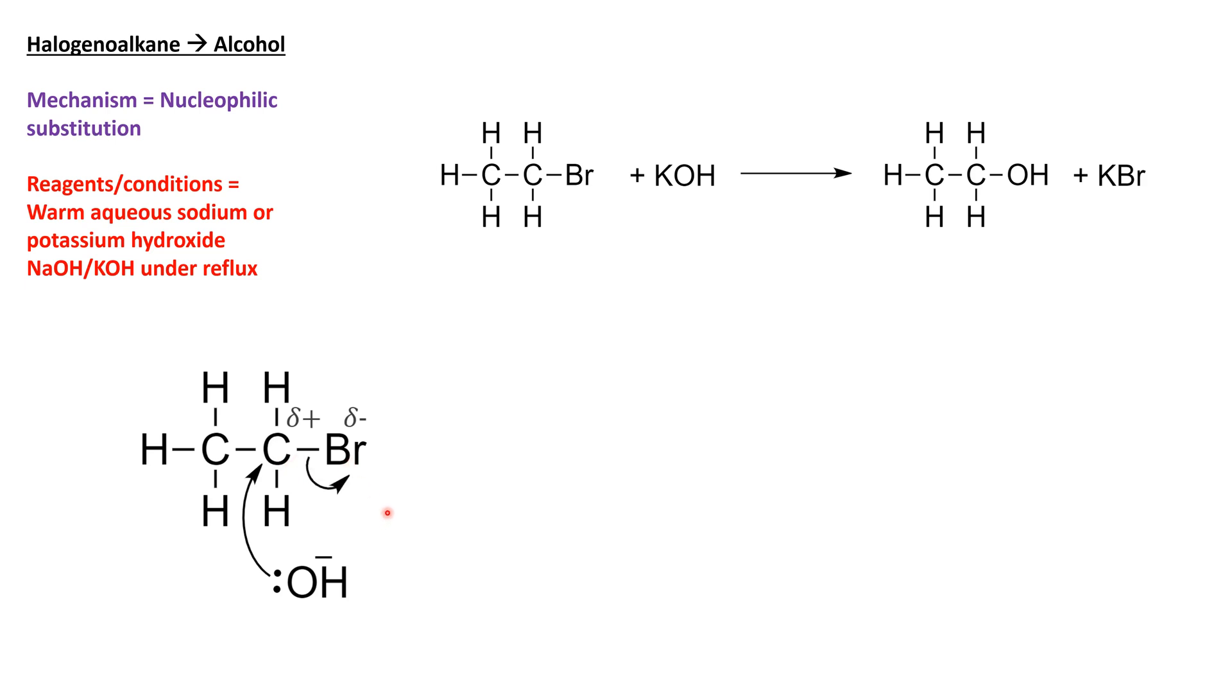Carbon can't form five bonds, so this bromine group needs to leave, taking its electrons with it as bromide. This will form our alcohol—we've substituted the bromine for the OH group, the hydroxyl group, and we'll also get the byproduct of KBr.